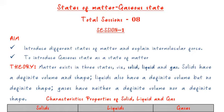Matter exists in three states, as all of you know very well: solid, liquid, and gas. Solids have a definite volume and shape. Liquids also have a definite volume but no definite shape. Gases have neither a definite volume nor a definite shape.